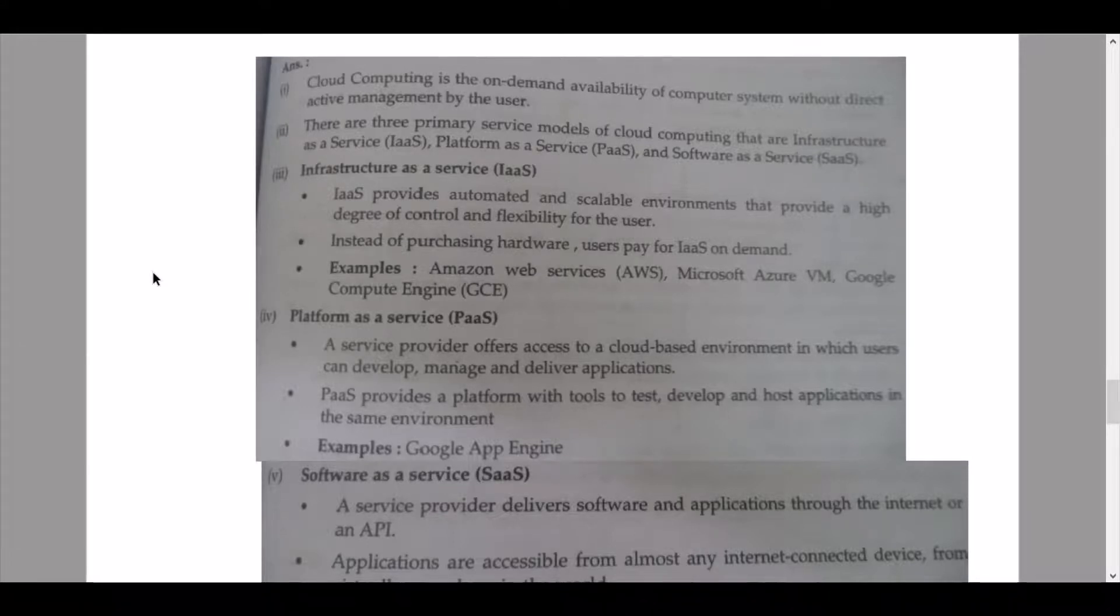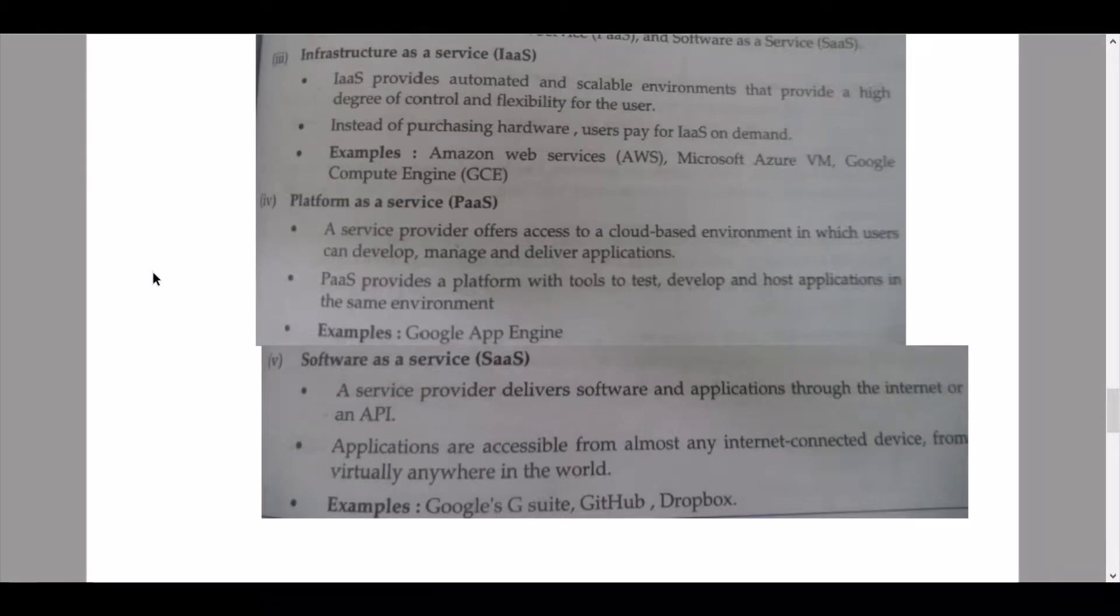Infrastructure as a Service has been described. IaaS provides automated and scalable environments that provide a high degree of control and flexibility for the user. Instead of purchasing hardware, users pay for IaaS on demand. Examples: Amazon Web Services (AWS), Microsoft Azure VM, Google Compute Engine (GCE). These were the examples for the IaaS. Then we continue to Platform as a Service (PaaS). A service provider offers access to a cloud-based environment in which users can develop, manage, and deliver applications. PaaS provides a platform with tools to test, develop, and host applications in the same environment. For example: Google App Engine.